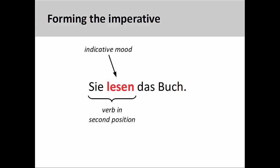The imperative mood is used to form commands and requests. The easiest imperative form to learn is the formal, as it requires only a slight modification to the syntax of the sentence. For example, the sentence 'Sie lesen das Buch' — you read the book — is in the indicative mood as it reports on the action of the subject.